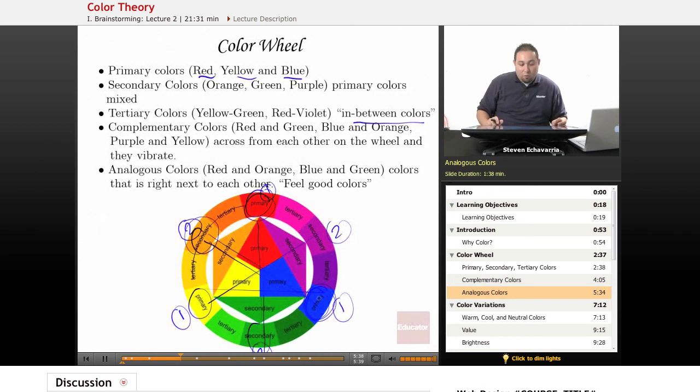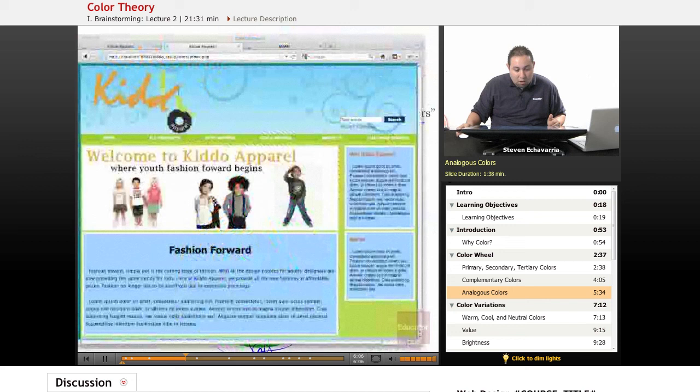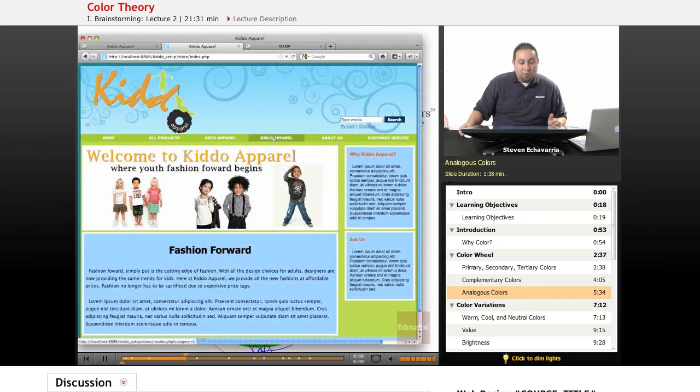And then you have your analogous colors, which are red and orange, blue and green. They're basically right next to each other colors. They call them the feel good colors because you can use different shades of them and it's not going to go wrong. It's actually going to blend, like these purples here. If you put them all together, they'll be fine, just like these greens here. And I'll show you that example right here. I used what you would consider analogous colors, the feel good colors, because they're all so close and there's three different shades right there of green. But it makes sense. It's not overwhelming. You can see the little differences and it's not too strong.